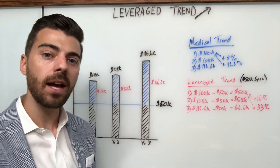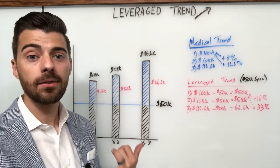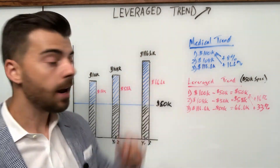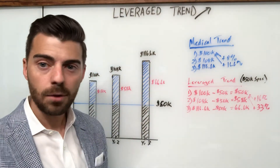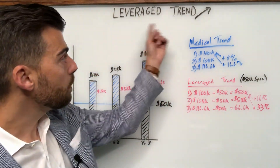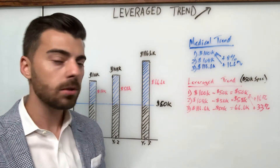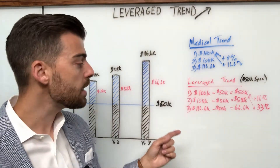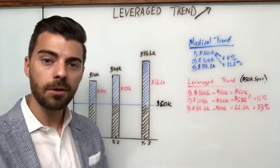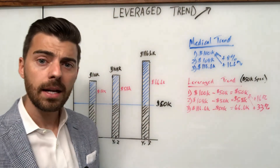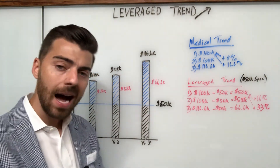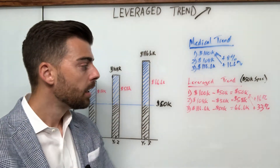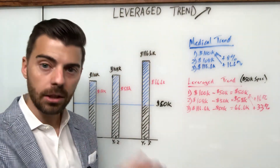A couple of reasons this comes into play. Leverage trend impacts your renewals. By default, the stop-loss carrier is going to factor in leverage trend to your renewal regardless of whether you had any claims at all — this will be a consideration. There are other variables and subjective underwriter discretion involved, but at minimum they're going to consider leverage trend in your stop-loss renewal for specific stop-loss. Over time, you're also more likely to be paying too much in fixed cost or premium if you retain your deductible at the same level year over year.